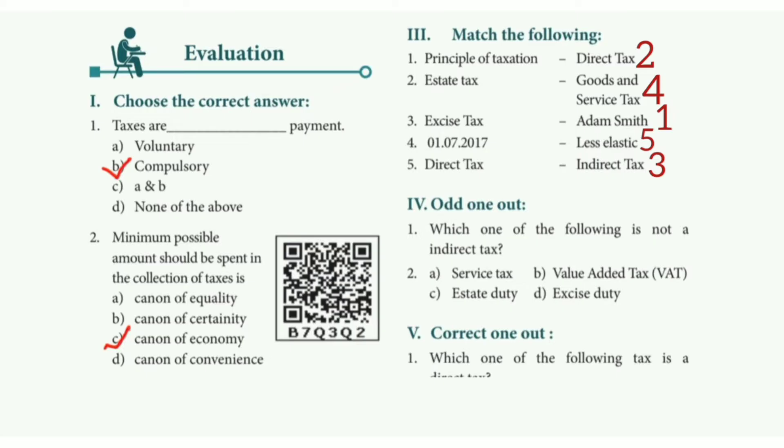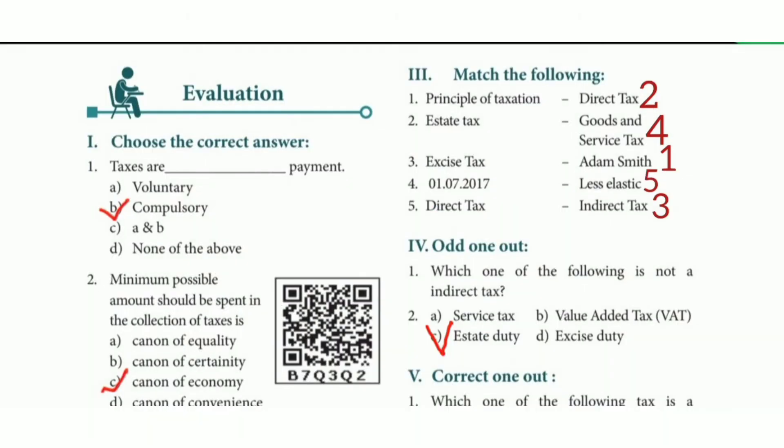Fourth: 2017 — the answer is Goods and Service Tax. Fifth: direct tax — the answer is less elastic.